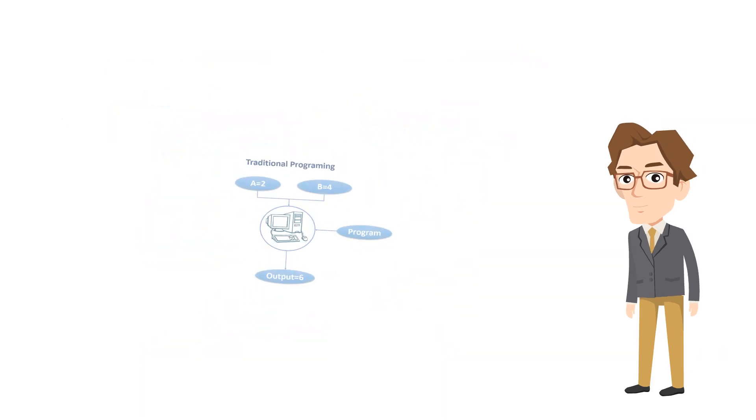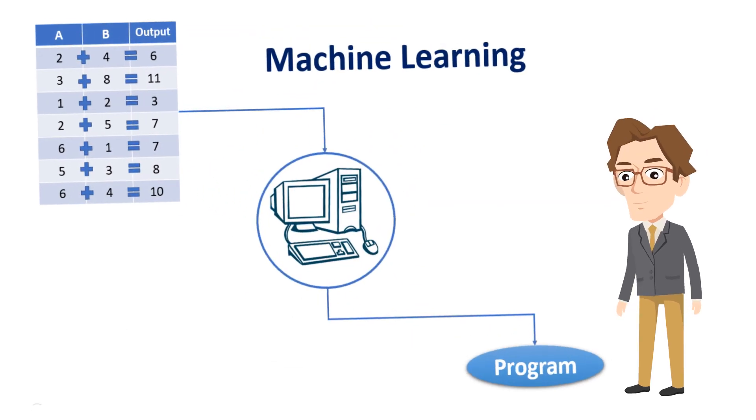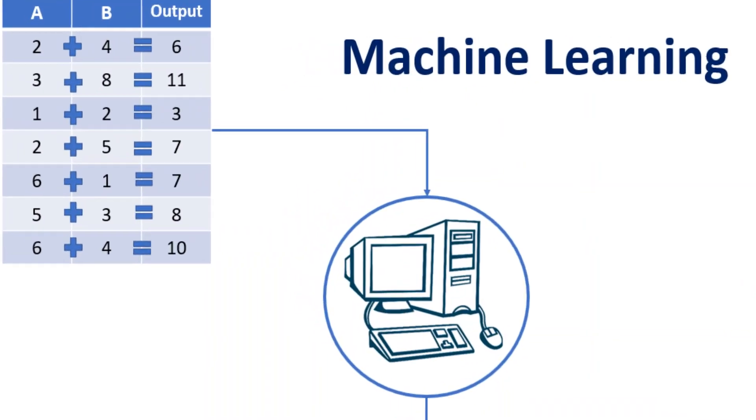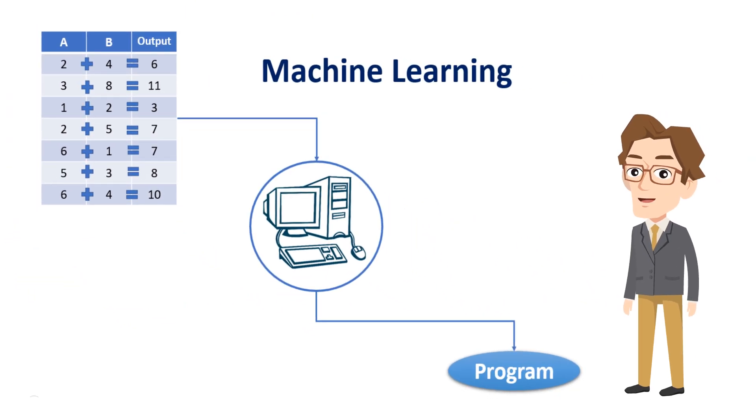For better understanding, let's take an example. Suppose you want to add two numbers. In traditional programming, you provide A and B as input plus an addition program, and the computer gives you output. In machine learning, you give a dataset of inputs A and B with their output values, and your computer generates an addition program for new data. But you should not use machine learning for just an addition program.